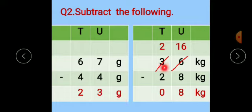Next one: 36 kg minus 28 kg. Now here we cannot subtract 8 from 6. Means we have to borrow from the tens place. So cut 3 here, write 2. Cut 6 and write 16. 16 minus 8 is 8 and 2 minus 2 is 0. So here answer is 8 kilogram.